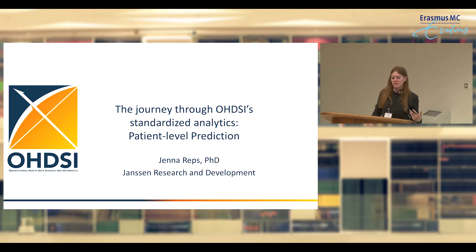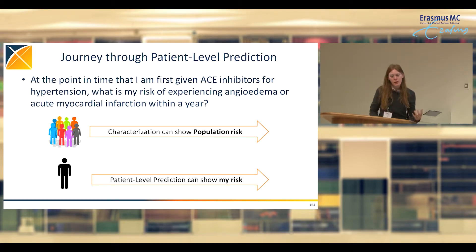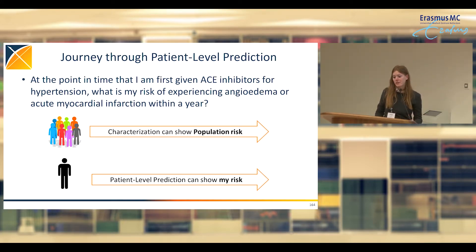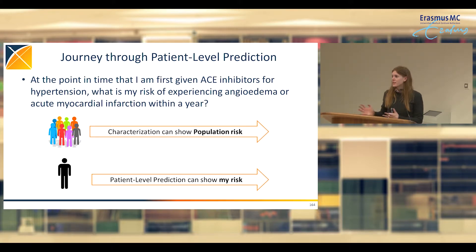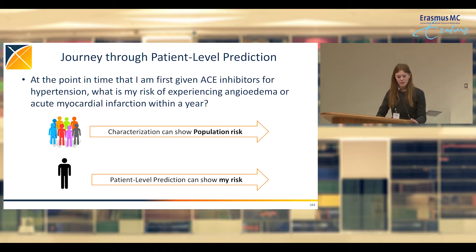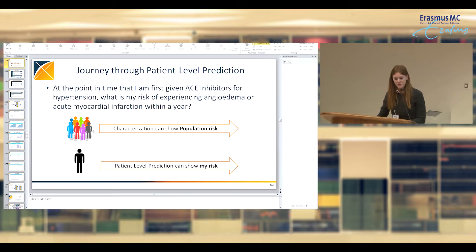I'm going to talk about the journey of patient-level prediction. There may be a point where you're given an ACE inhibitor for hypertension and want to know your risk of a potential side effect like angioedema, or perhaps the drug doesn't work so well and you end up having an acute myocardial infarction — and you want to know your risk within a year. The characterization Anthony just showed could give you the population risk, but maybe you want to know your personal risk.